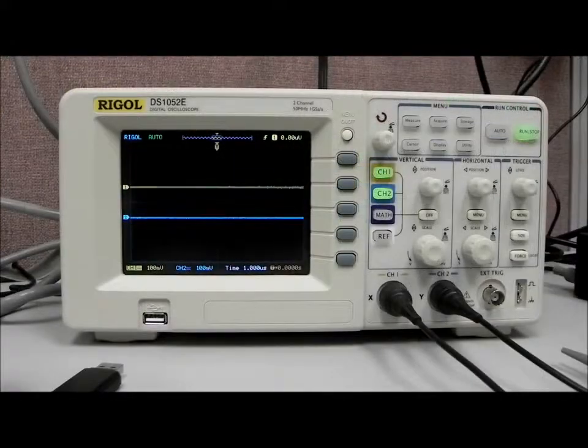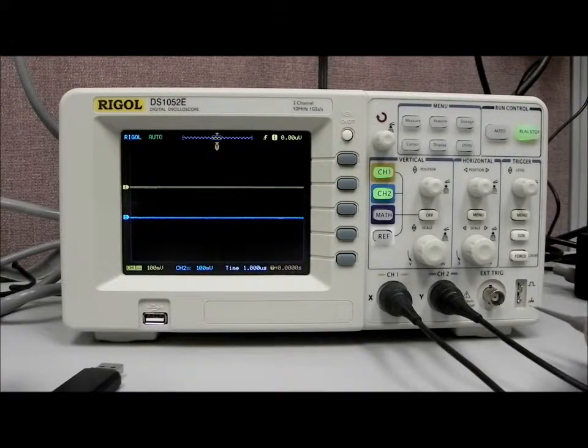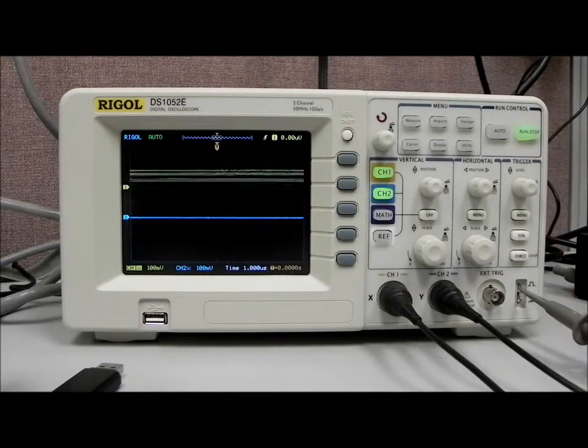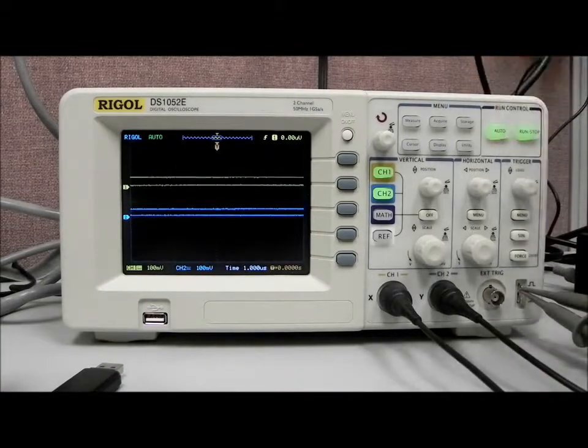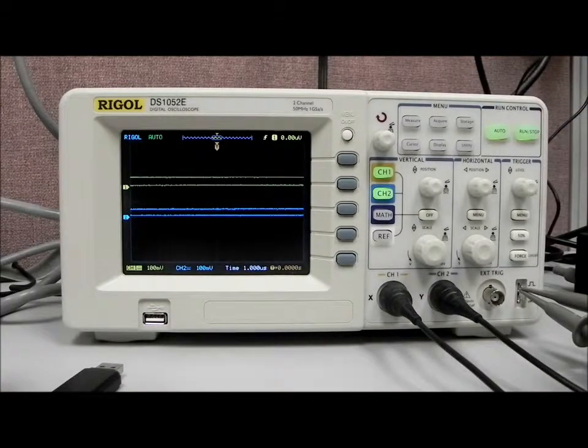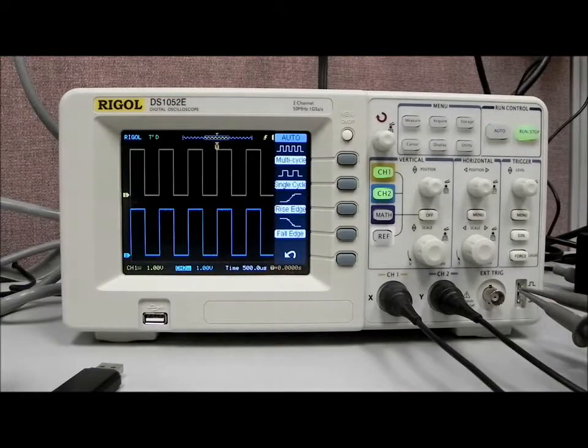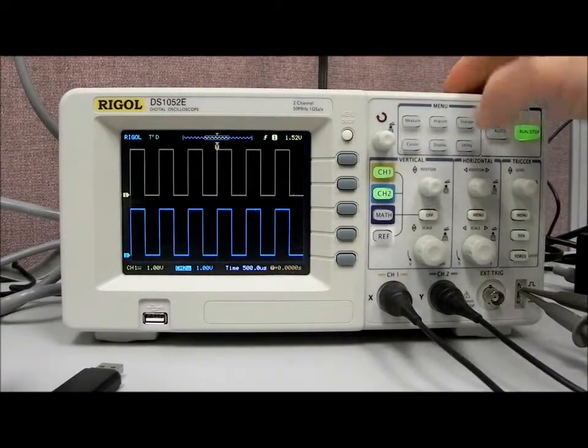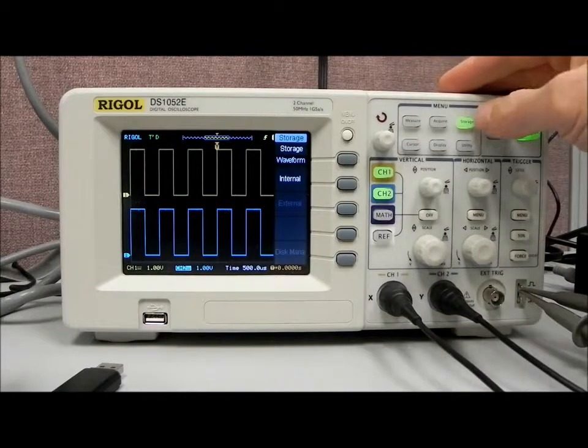I'd like to take a closer look at some of the storage capabilities of the DS-1000 series of scopes. I'm going to connect channel one and channel two to the square wave generator. I'm going to press auto. So now on this display we should see two square waves, and now let's say I wanted to store that particular waveform.